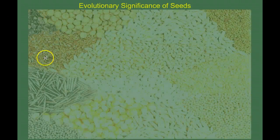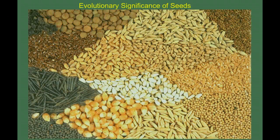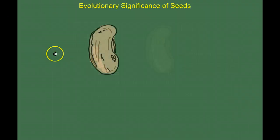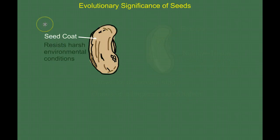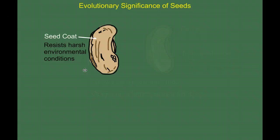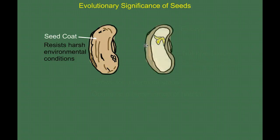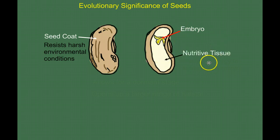Let's start with the evolutionary significance of seeds. Seeds have a thick, protective seed coat that is resistant to harsh environmental conditions. It can withstand hot and cold, dry conditions, and maybe even the enzymes of the intestinal system of an animal it might pass through. Inside the seed we have the baby plant — the embryo — and surrounding the embryo is nutritive tissue, which provides energy to sustain the embryo.